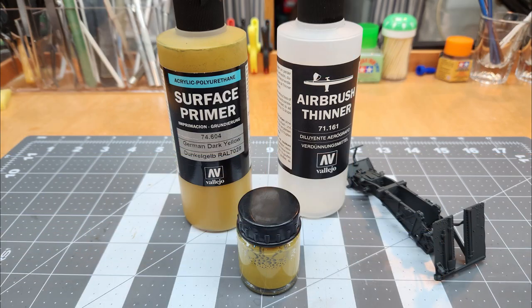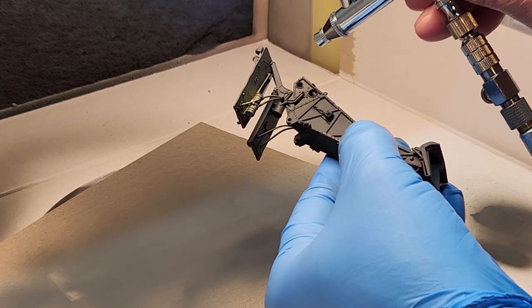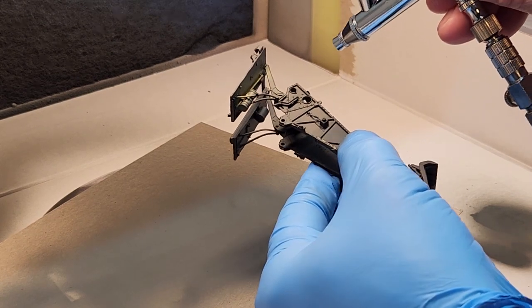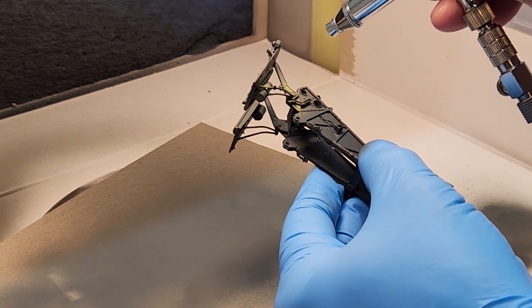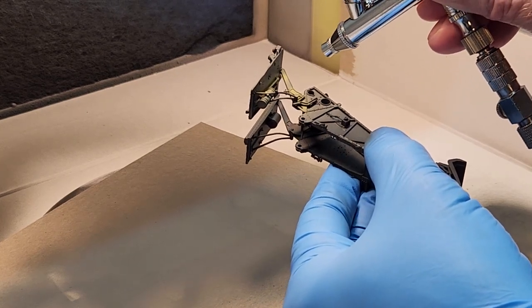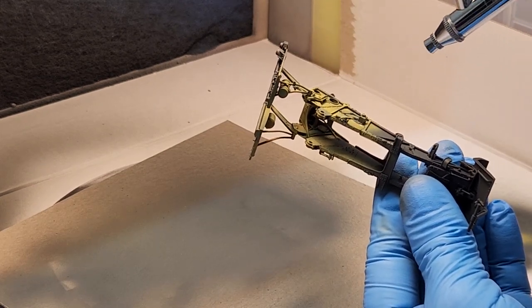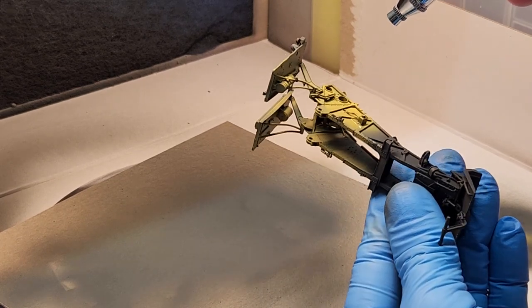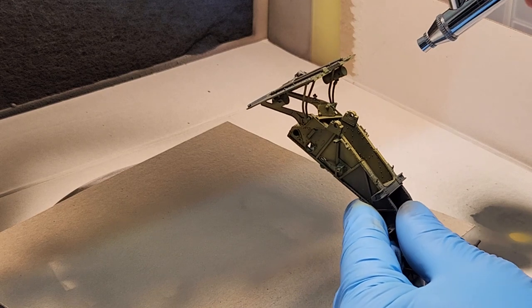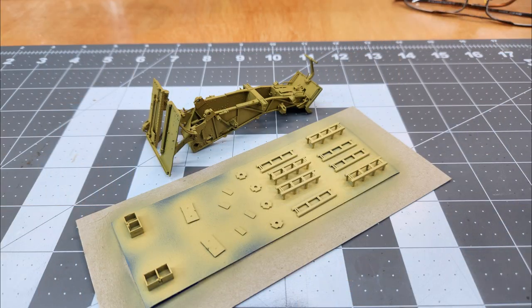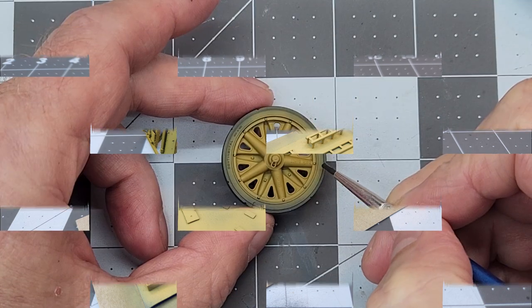With everything primed in our Panzer gray, we're going to use German dark yellow and paint everything with that. Paying close attention to all those little areas that are really hard to get to, we're going to hit those first. Then we'll give all the parts a good coat of German dark yellow. For our wooden crates and everything, I lightened up our German dark yellow with some Vallejo white. You can see the contrast difference that we have here, and that'll give us a good base for our wood effects later.